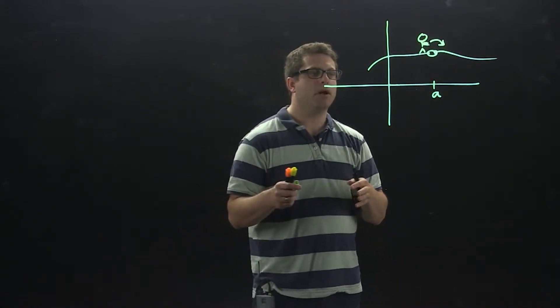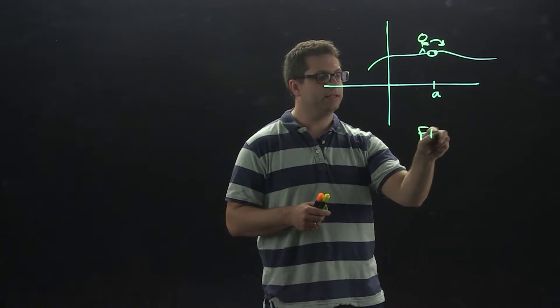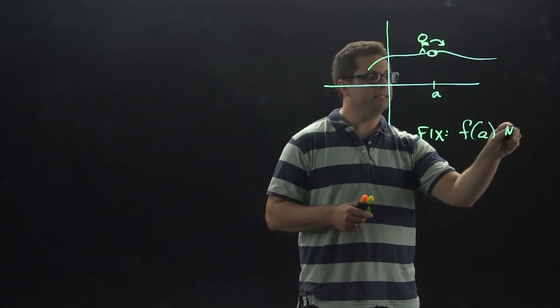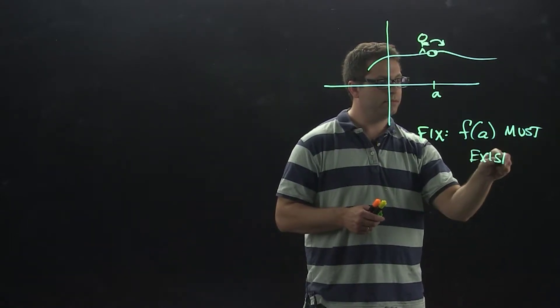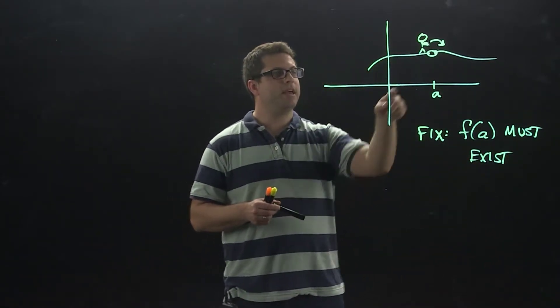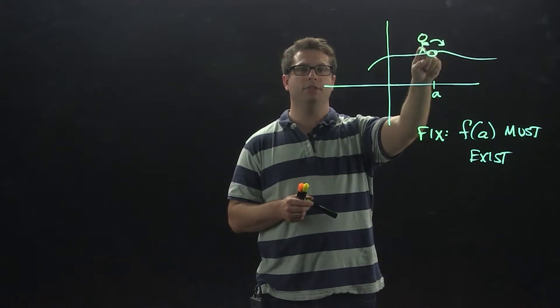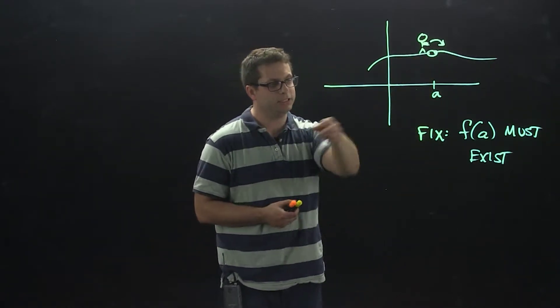How would we fix that problem? Well, the fix is that f of a must exist. If f of a must exist, that means we're not going to have to jump over this point and it will be okay. Condition one.